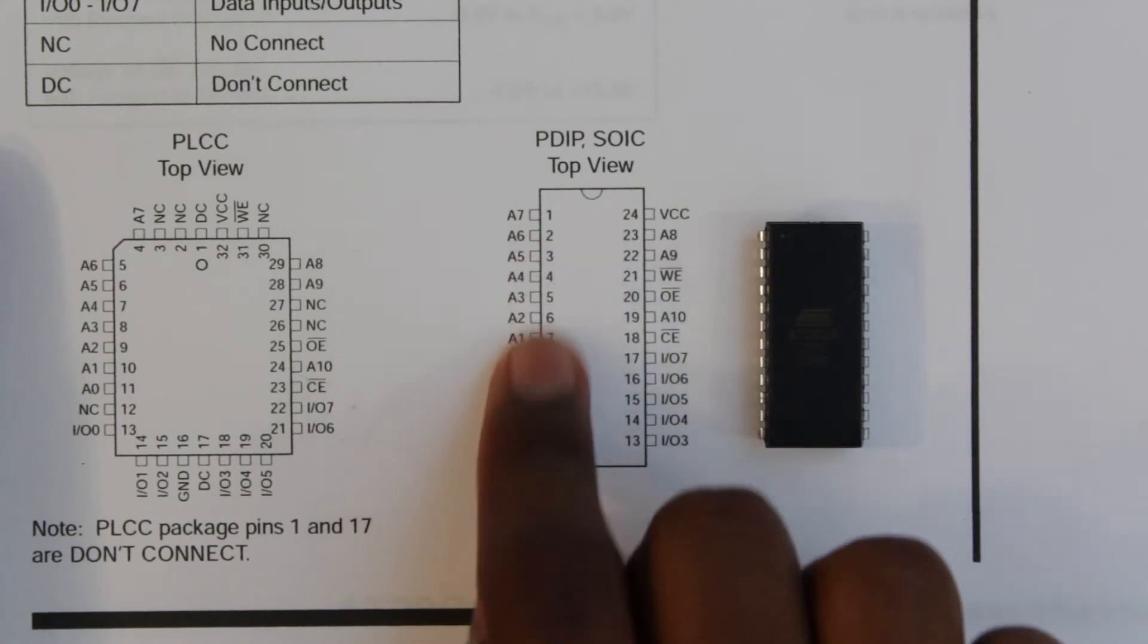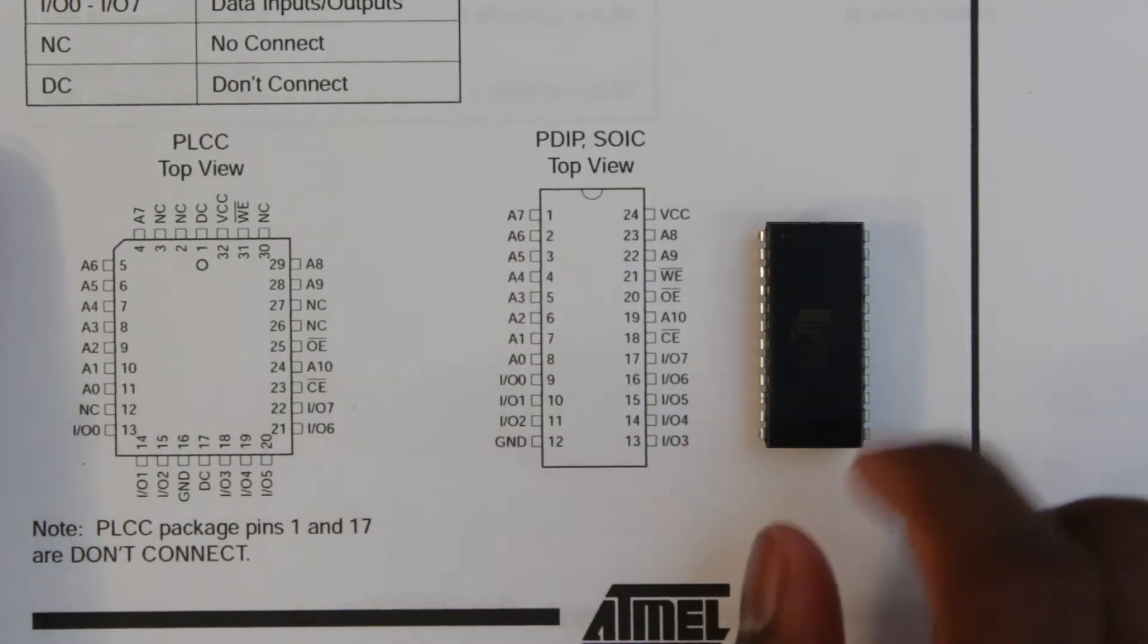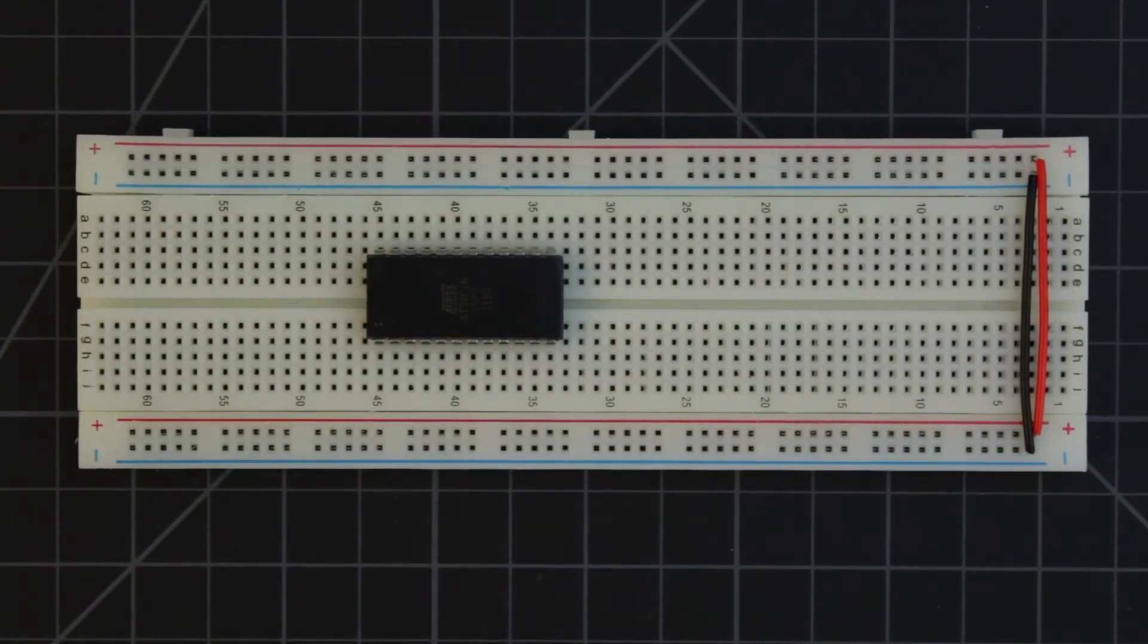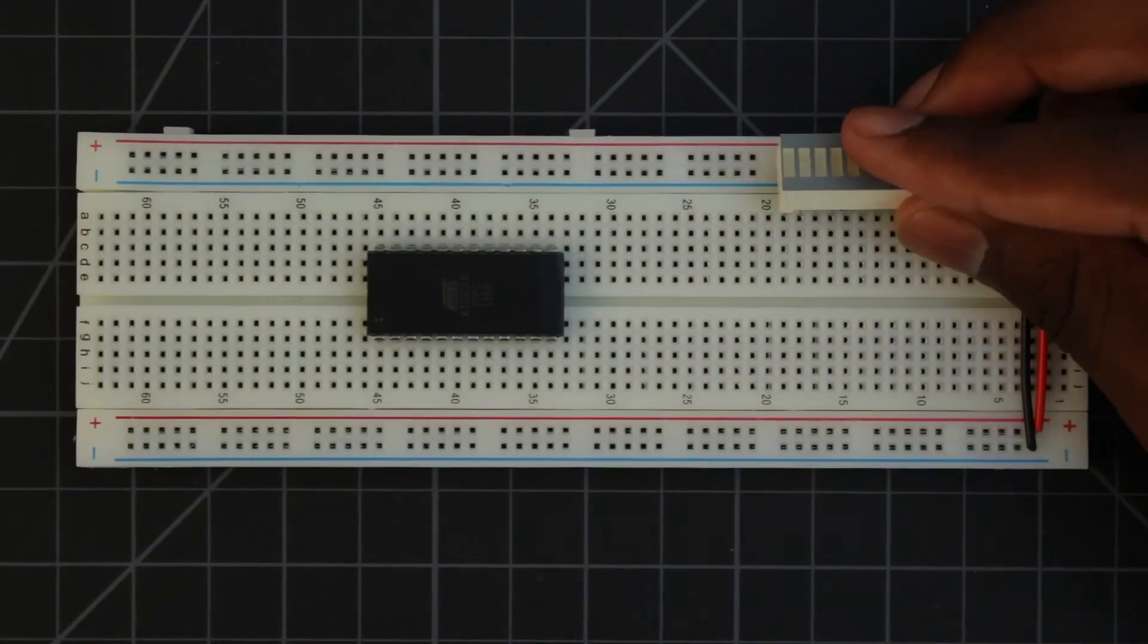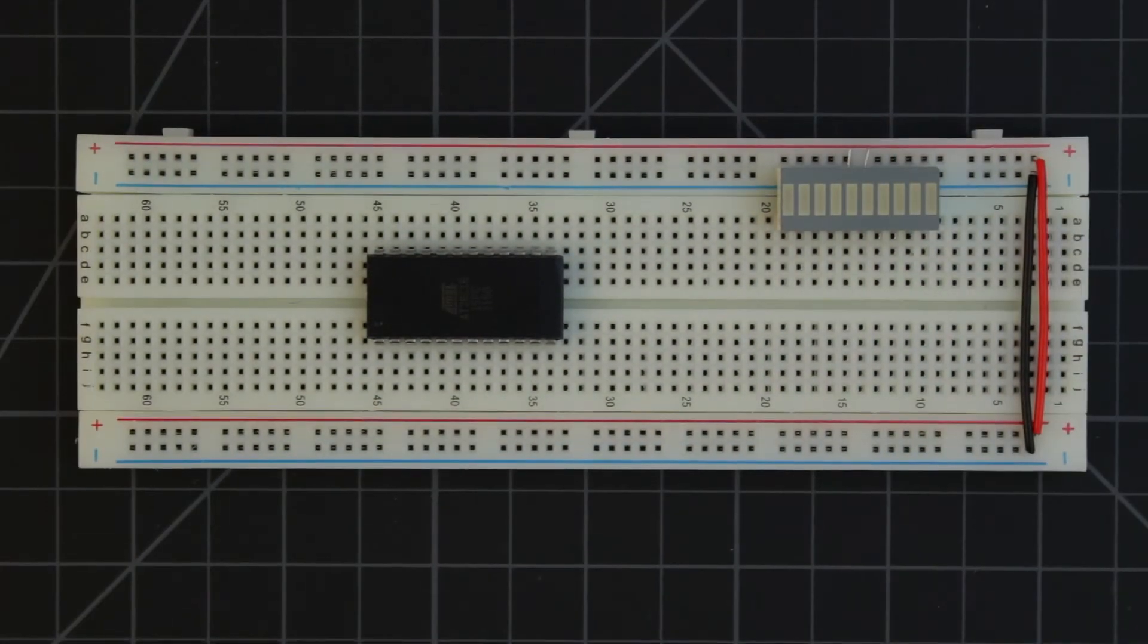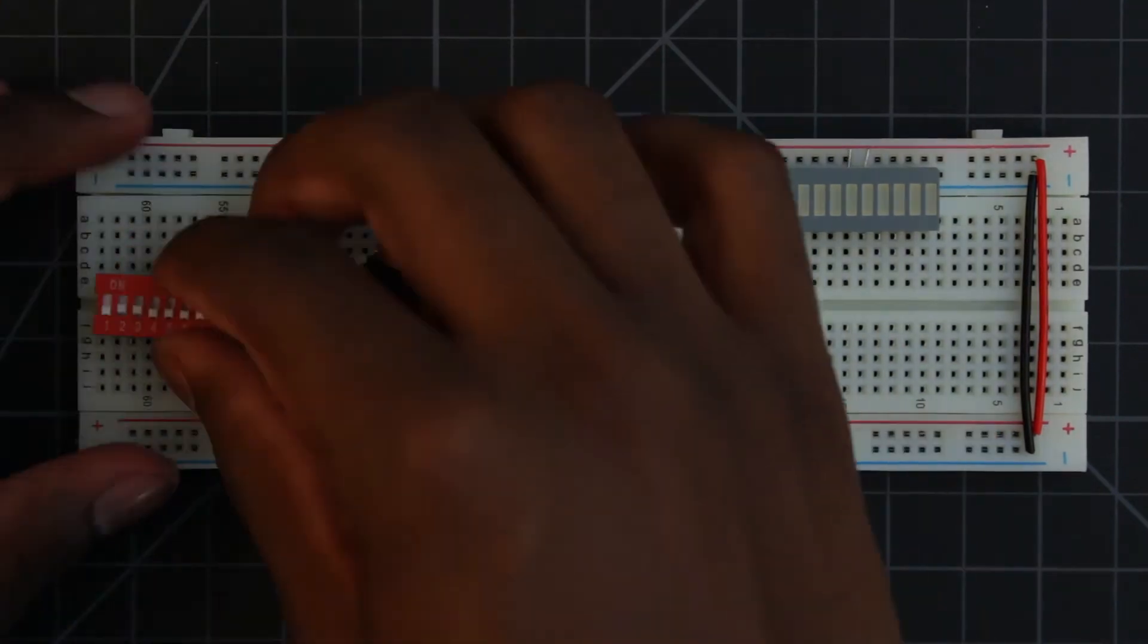Right now, what I want to do is hook up the addresses to some dip switches and the outputs to some LEDs. So we'll put the chip down and our LED strip down. Then we'll get our dip switches. I only have 8-bit dip switches, so since we need 11 bits, I'll just use two of them.